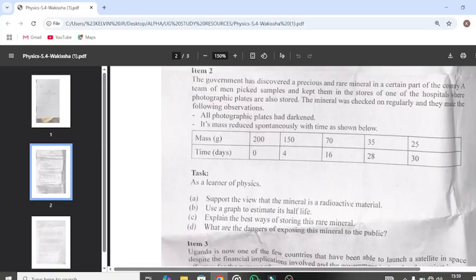When we continue here with Item 2, the government has discovered a precious rare mineral in a certain part of the country. A team of men picked samples and kept them in the store of one of the hospitals where photographic plates are also stored. The mineral was checked on regularly and they made the following observations: Observation 1 - all photographic plates had darkened. Observation 2 - its mass reduced spontaneously with time as shown in the table. You can see the mass in grams and the time in days on our table.